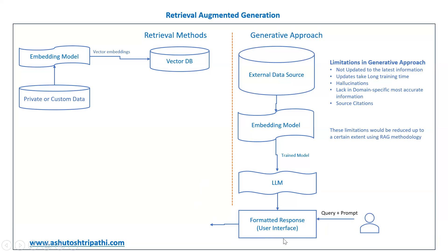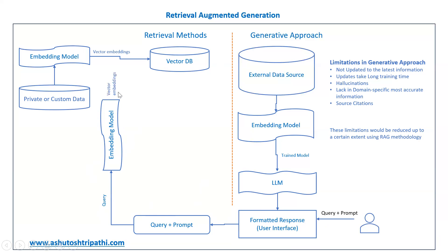The user interacts through a user interface — the backend is the engine. The query and prompt entered by the user traverse through the embedding model, get converted to vector embeddings, and then a similarity-based search is performed on the vector DB. Similar documents are retrieved from the vector DB. This is the retrieval-based component, which has key sub-components: retriever, ranker, and generator.